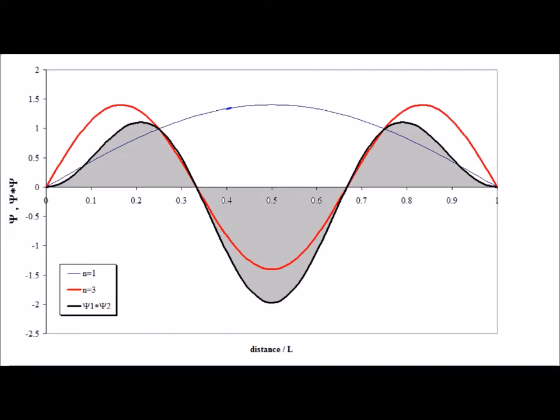Here we compare the n equals 1 and n equals 3 eigenfunctions. The product of the two functions is the black line curve, and we've shaded the area under the curve.